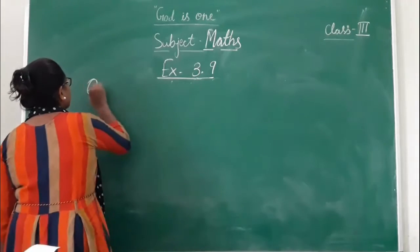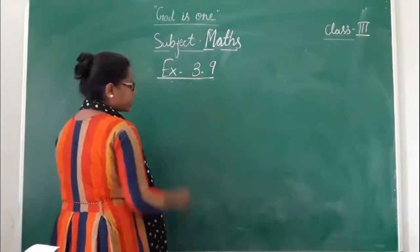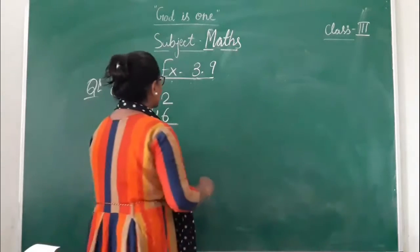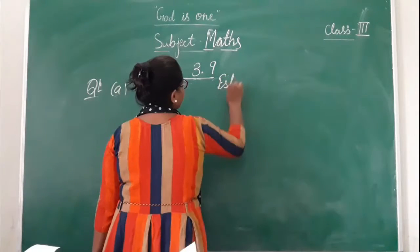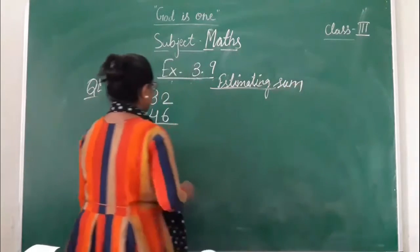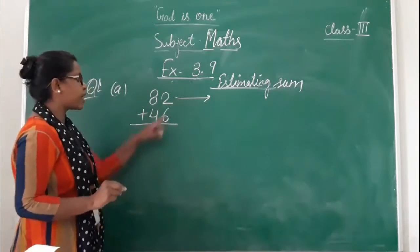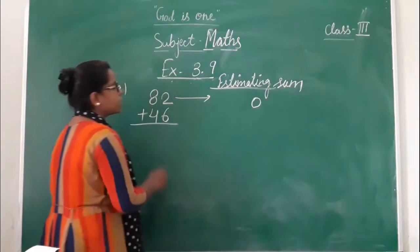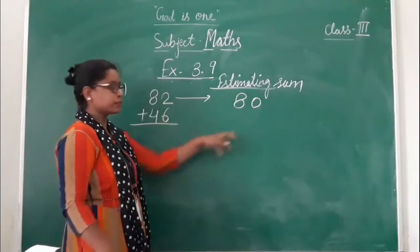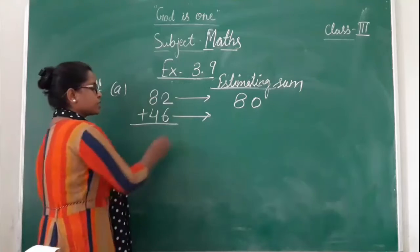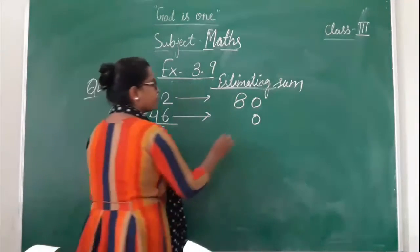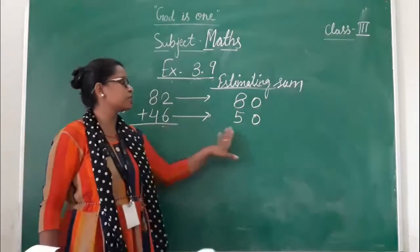Students, exercise 3.9, question number 1. We will solve this part. The numbers are 82 and 46. First, we estimate. For 82: the ones place is 2, which is less than 5, so there are no changes in the tens place. So 82 rounded off to the nearest ten is 80. For 46: 6 is greater than 5, so ones place becomes 0 and the tens place increases by 1. So 46 rounded off to the nearest ten is 50.